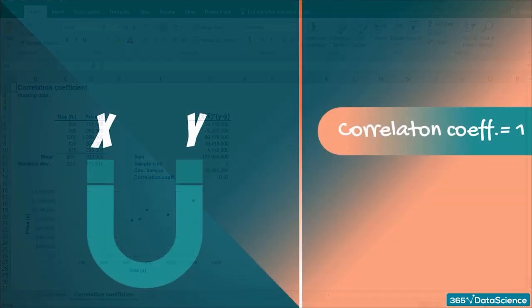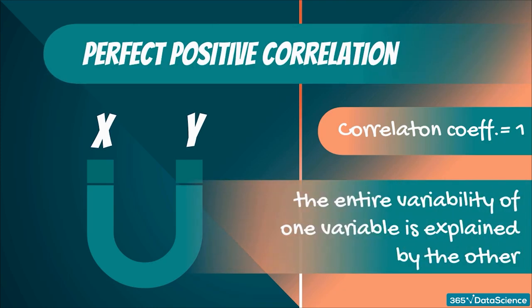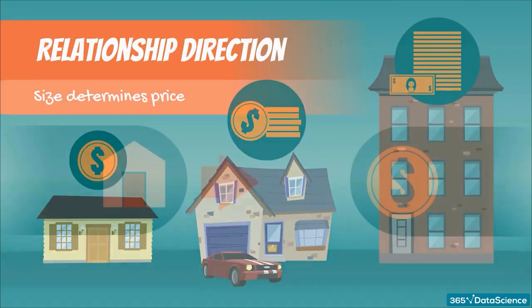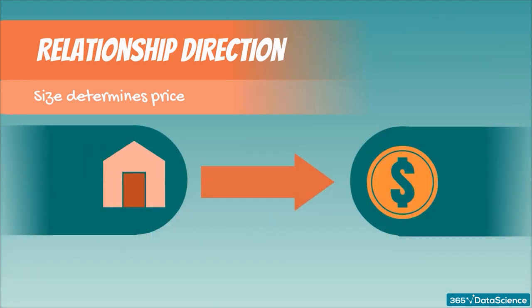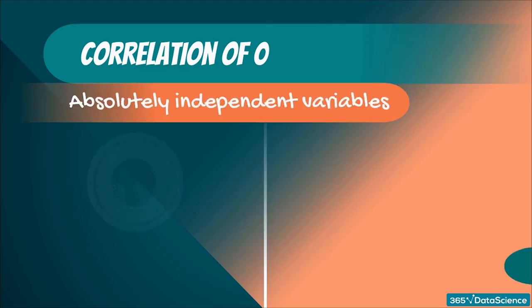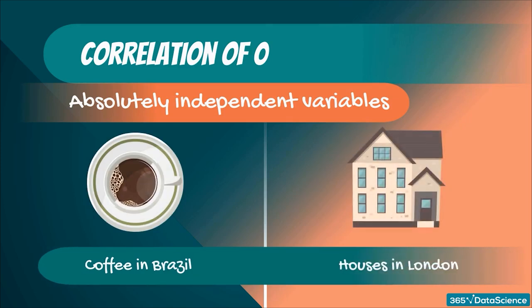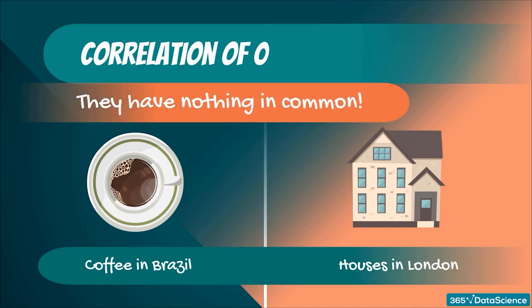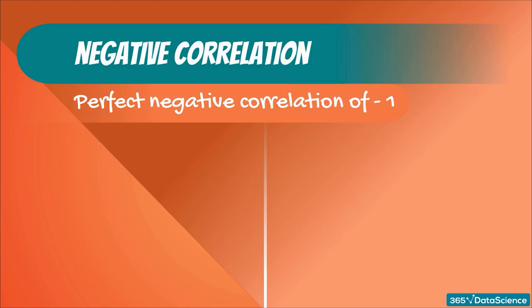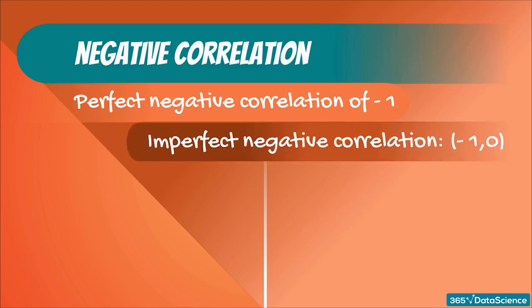Size determines the price — on average, the bigger house you build, the more expensive it will be. This relationship goes only one way: once a house is built, if for some reason it becomes more expensive, its size doesn't increase, although there is a positive correlation. A correlation of 0 between two variables means they are absolutely independent from each other — we would expect a correlation of 0 between the price of coffee in Brazil and the price of houses in London. Finally, we can have a negative correlation coefficient — think of a company producing ice cream and a company selling umbrellas, where there is a clear negative correlation between their revenues.